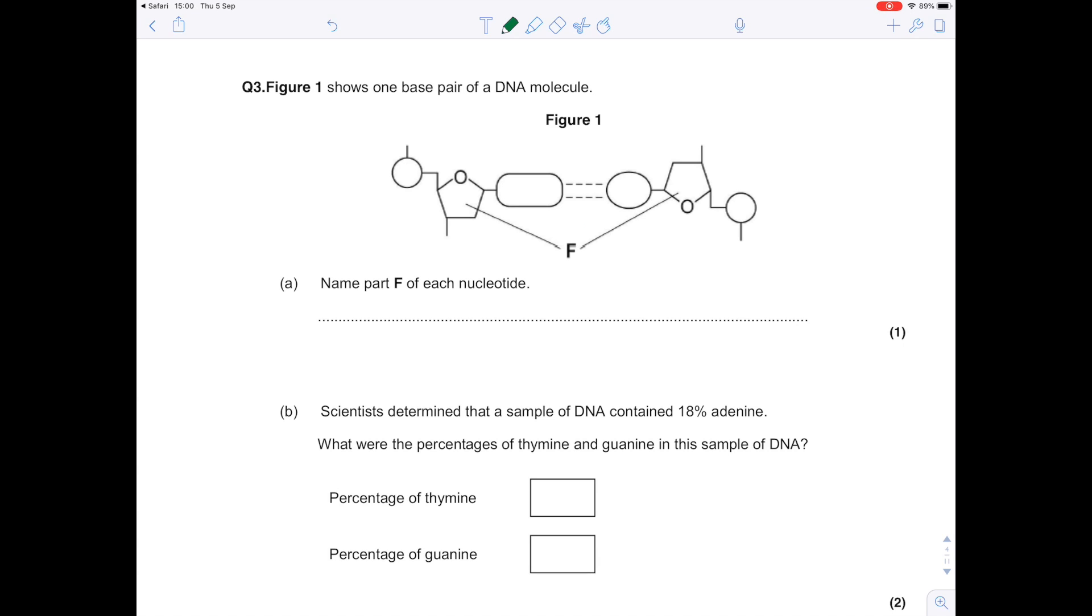Question 3: Figure 1 shows one base pair of a DNA molecule. Name part F of each nucleotide. So this is a 5-carbon sugar, and remember DNA stands for deoxyribose. Sugars always end in -ose, so it's deoxyribose sugar.